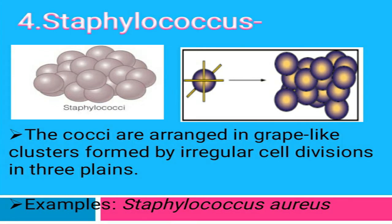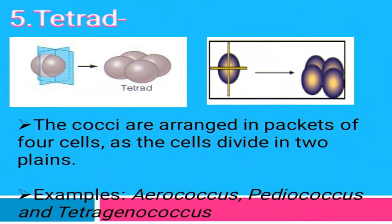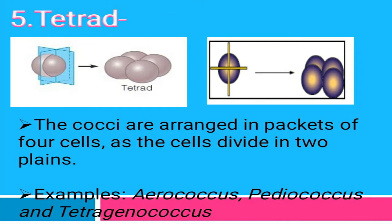The fourth arrangement is staphylococcus. In staphylococcus, the cocci cells undergo irregular cell divisions in three planes — X, Y, and Z — and produce many cells that arrange themselves in grape-like clusters, as you can see in the image. This is called staphylococcus. The example is Staphylococcus aureus.